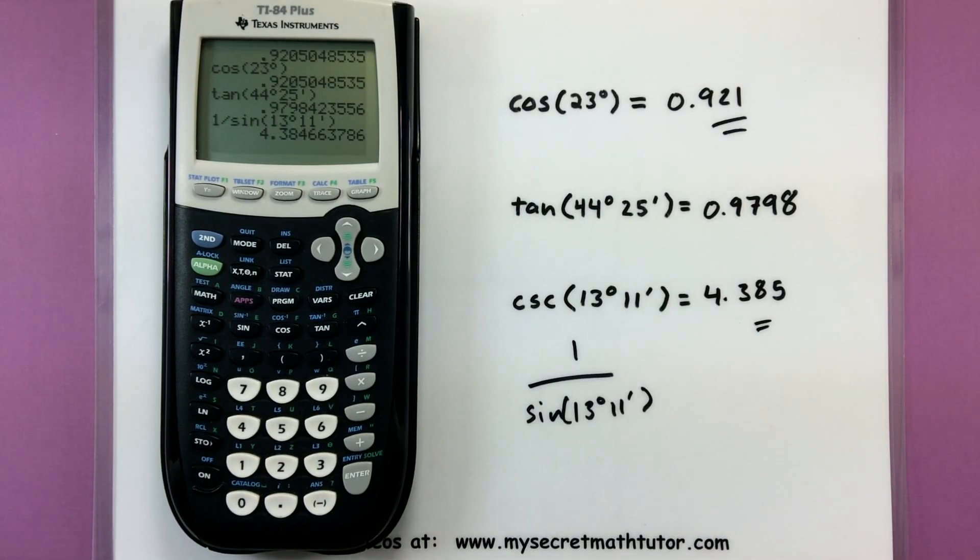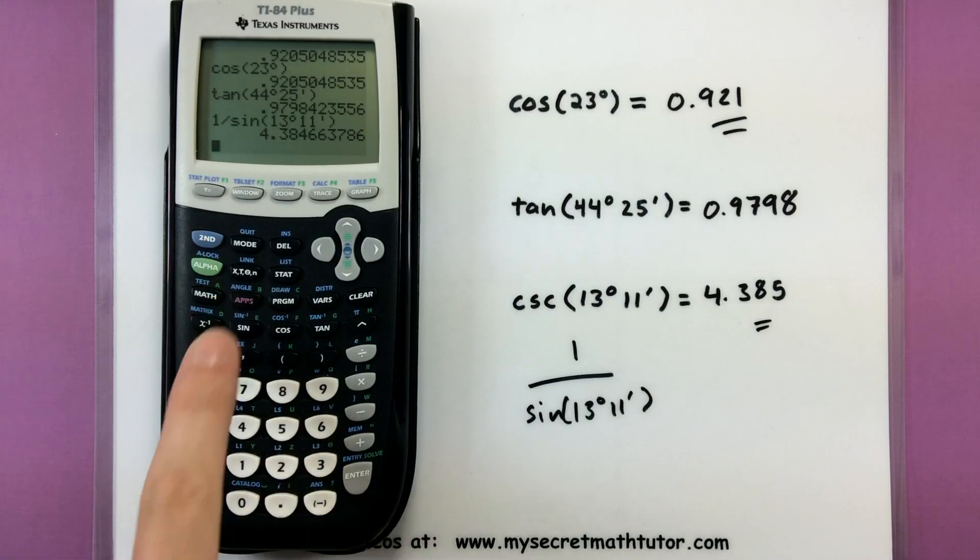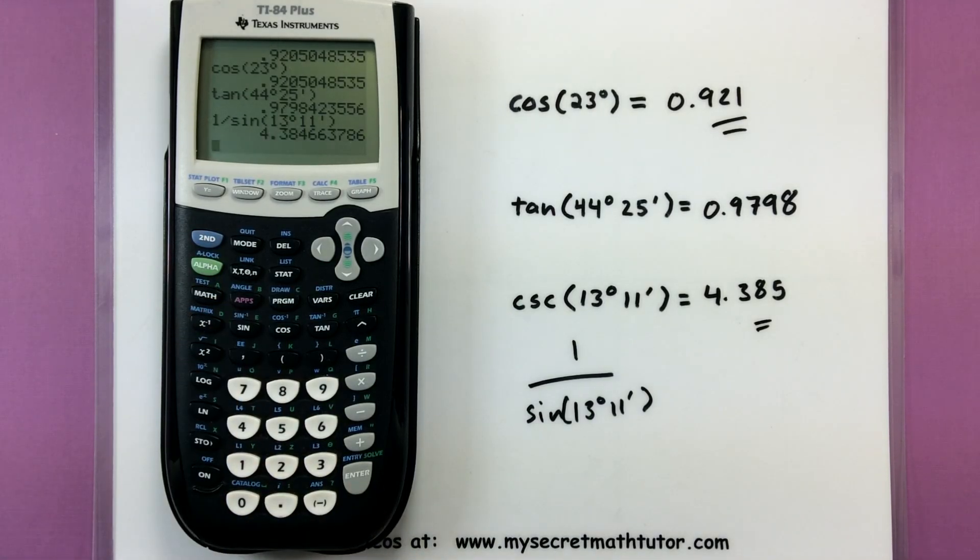So some really good things that you can do with this calculator. Remember to check your mode first, that you can use units by pressing second angle, and also remember your reciprocal identities so that you only need to use sine, cosine, and tangent. If you'd like to see more videos, please visit mysecretmathtutor.com.